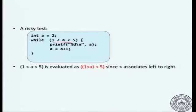C will apply the precedence and associativity rules. In this case it is the same operation, so only associativity applies, and according to associativity it is left to right. So this will be evaluated as (1 less than a) less than 5. Now a is 2, so 1 less than a is false — that becomes 0. So the whole thing is 0 less than 5, which is true.